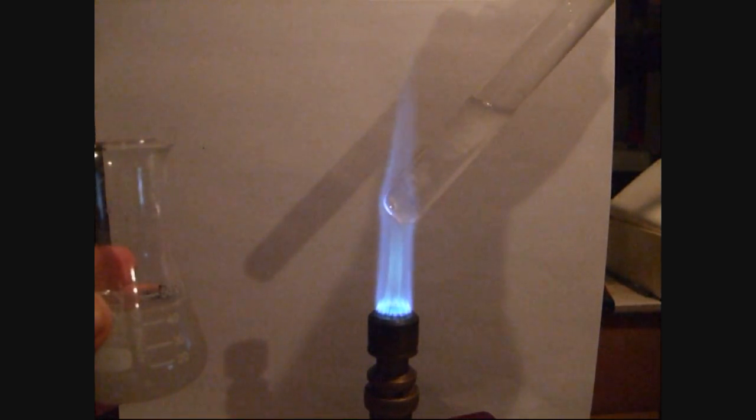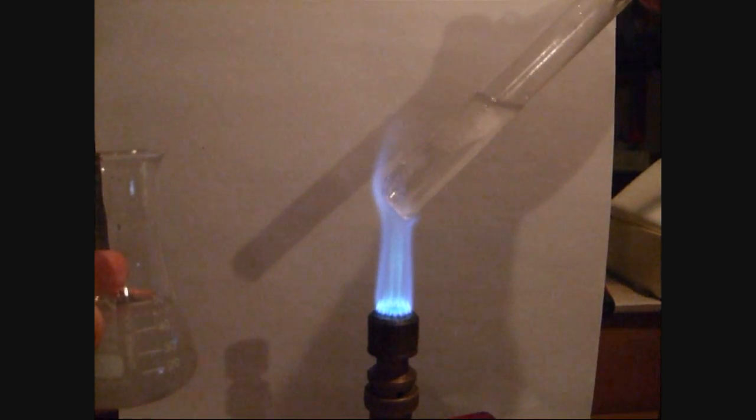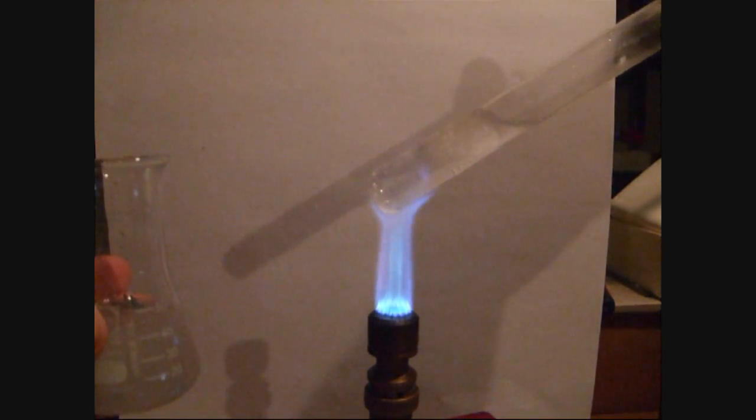Then the test tube is held into the flame and you can see the blue fluorescence on the surface of the test tube of the tin hydride-like compounds.